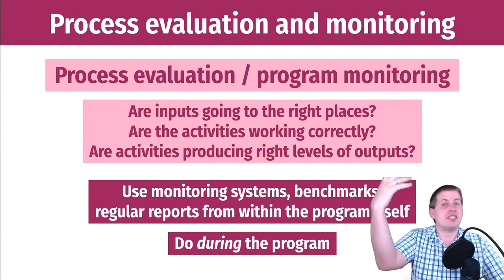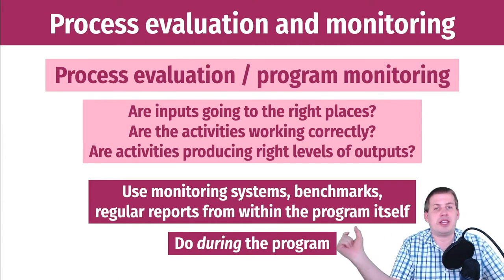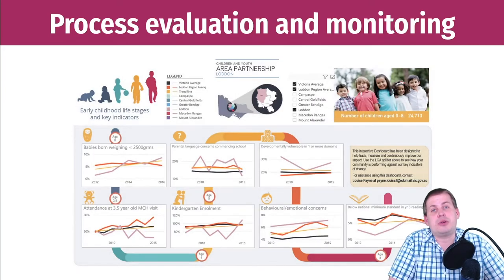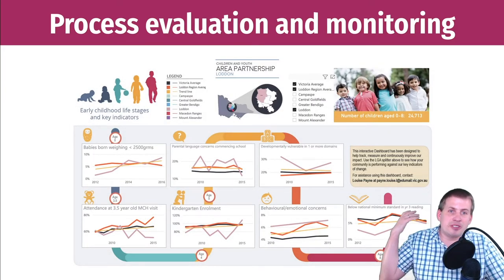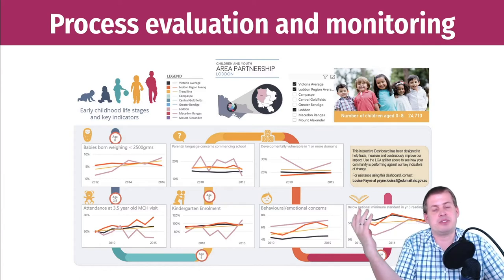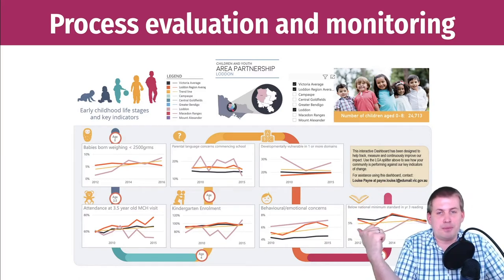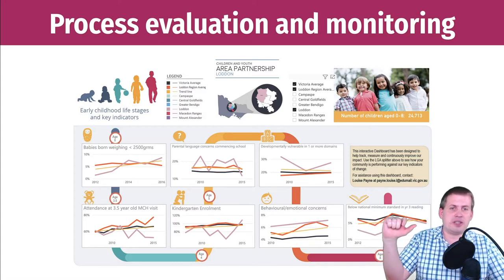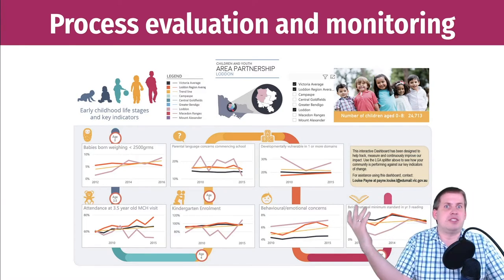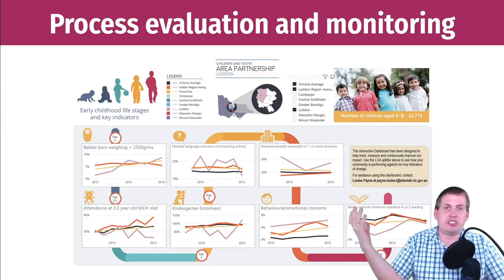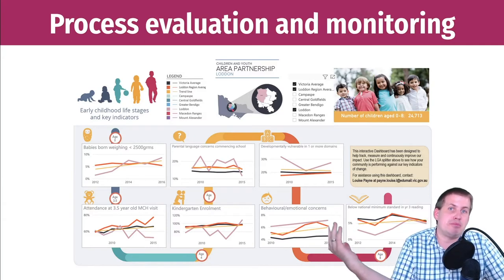With process evaluation, you're making sure inputs are working, activities are working, and outputs are being generated. A very common way to see this in practice is with a dashboard. If you Google 'program monitoring dashboard' you'll see many different examples of ways to measure progress. For instance, there's an example from a region in Australia — an actual public-private partnership dashboard showing different indicators and how they've been progressing over time, making sure all activities are working.